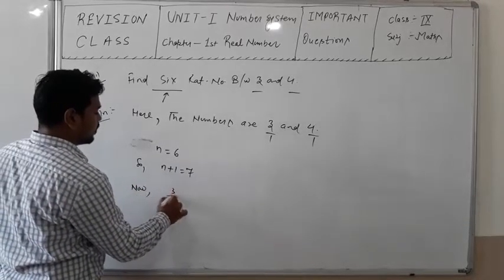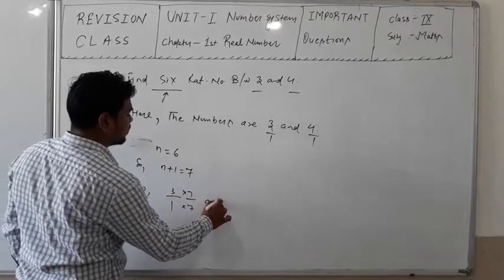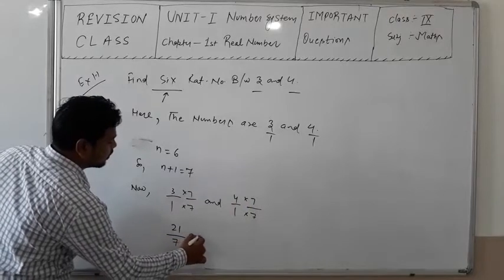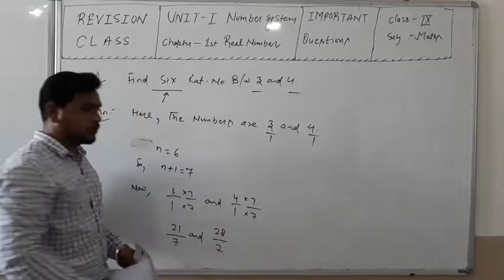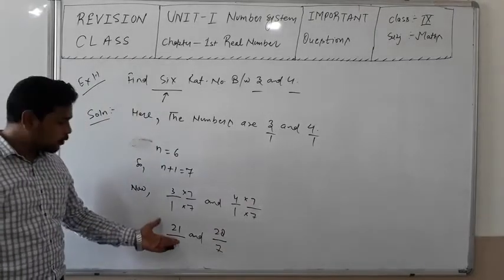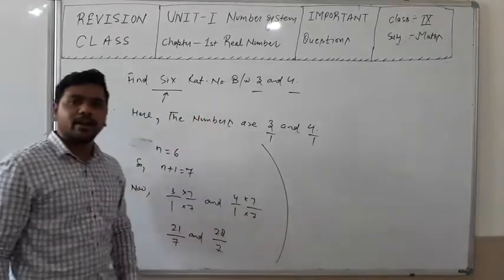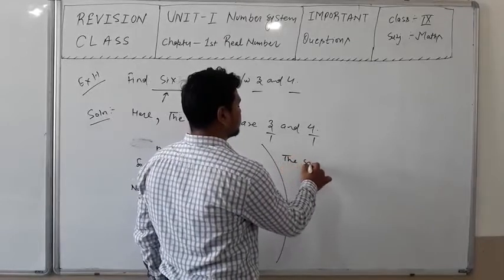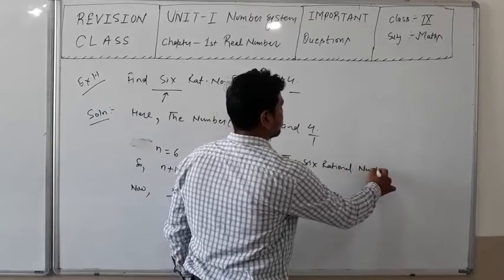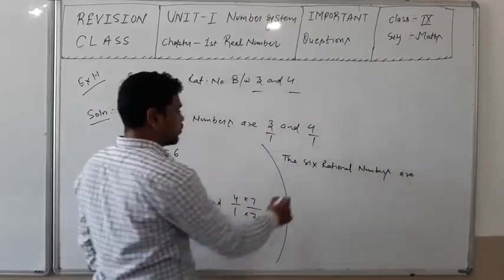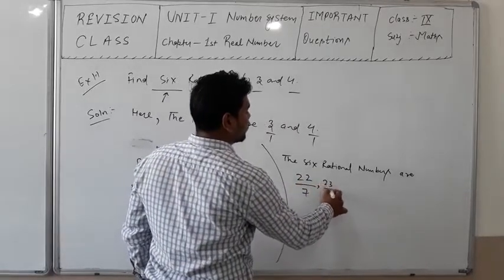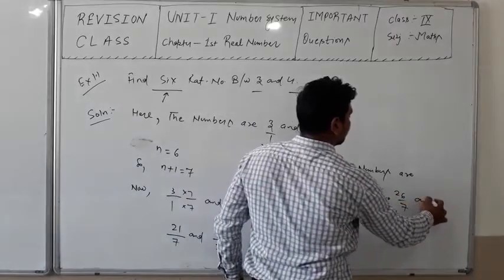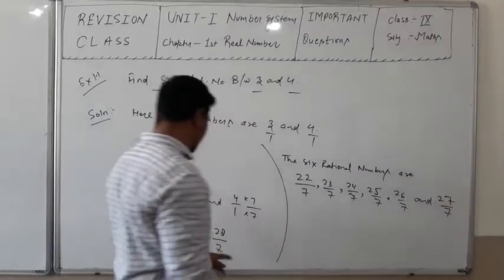So 3/1 multiplied by 7/7 gives 21/7, and 4/1 multiplied by 7/7 gives 28/7. Between 21/7 and 28/7, we can easily find 6 rational numbers. Those numbers are: 22/7, 23/7, 24/7, 25/7, 26/7, and 27/7.